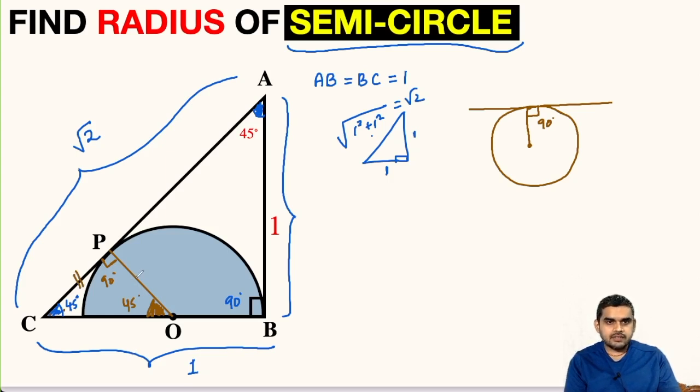Then this side is equal to this side. Triangle PCO is an isosceles triangle. Now let us name PO as R, that is radius of the semicircle. So PC will also be equal to R.